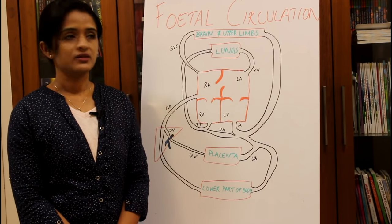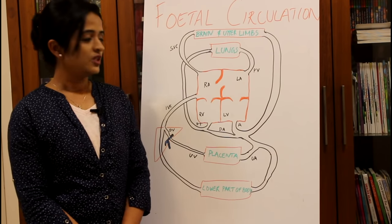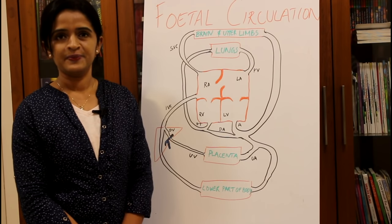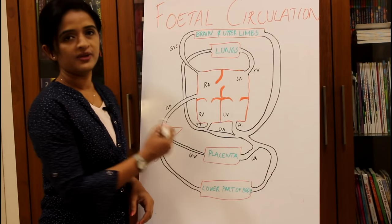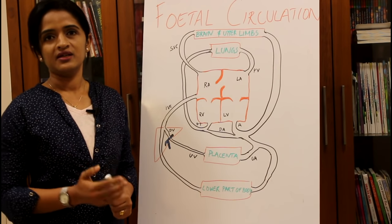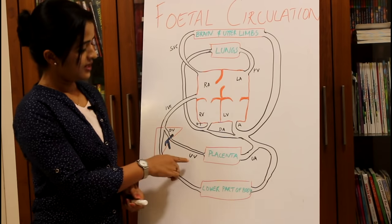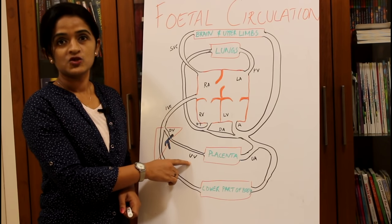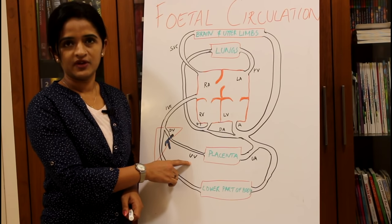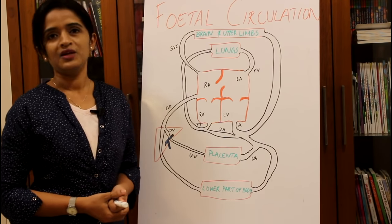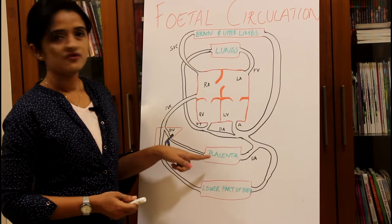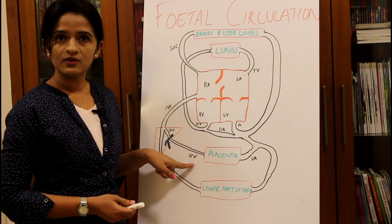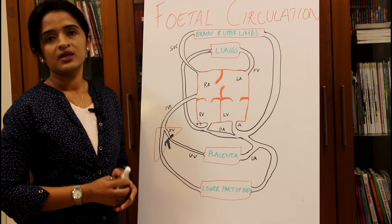As we all know, in the intrauterine period the lungs are not functional, so the purification of blood is done by the placenta of the mother. The purified blood from the placenta is taken to the fetus through the umbilical vein — it is actually the vein which is carrying the purified blood, whereas in adults we have arteries carrying purified blood.